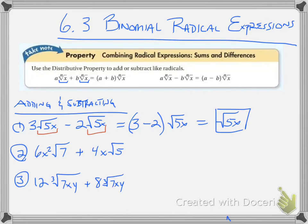This next one: 6x squared times the square root of 7 plus 4x times the square root of 5. Because these radicals are not the same, I cannot combine them.